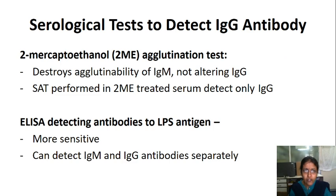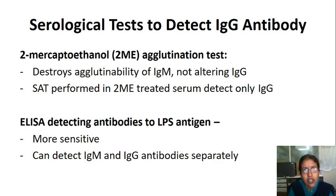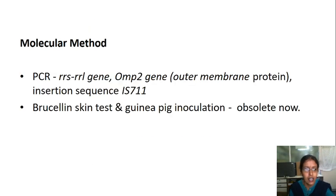Other serological tests include the 2-mercaptoethanol (2-ME) agglutination test, which destroys the agglutinability of IgM without altering IgG — so SAT performed with 2-ME treated serum detects only IgG. ELISA tests detecting antibodies to LPS antigen are more sensitive and can detect IgM and IgG antibodies separately. Molecular methods such as PCR are also available, targeted against the 16S rRNA gene, outer membrane protein 2 gene, or insertion sequence IS711. Brucella skin test and guinea pig inoculation are now obsolete.